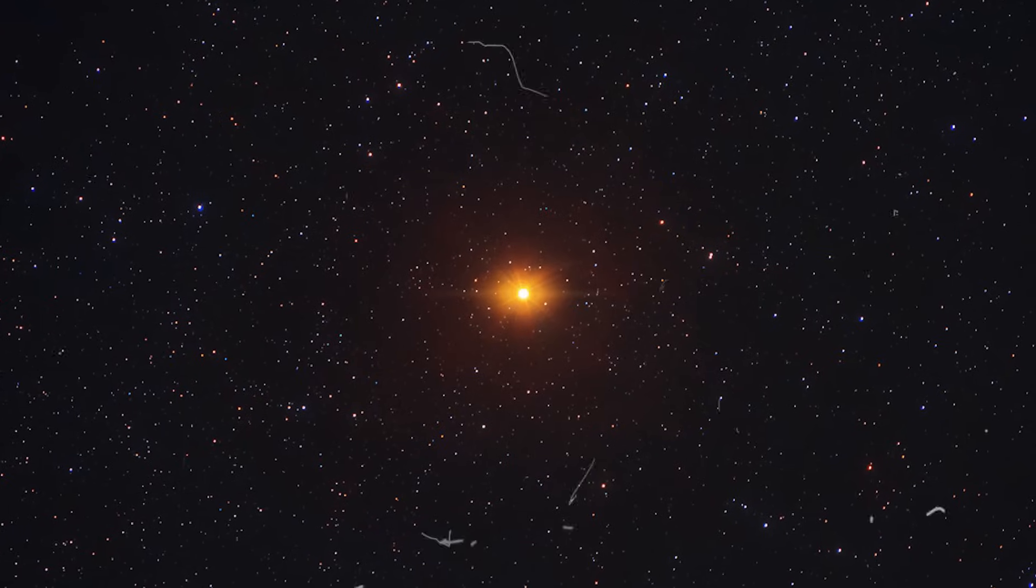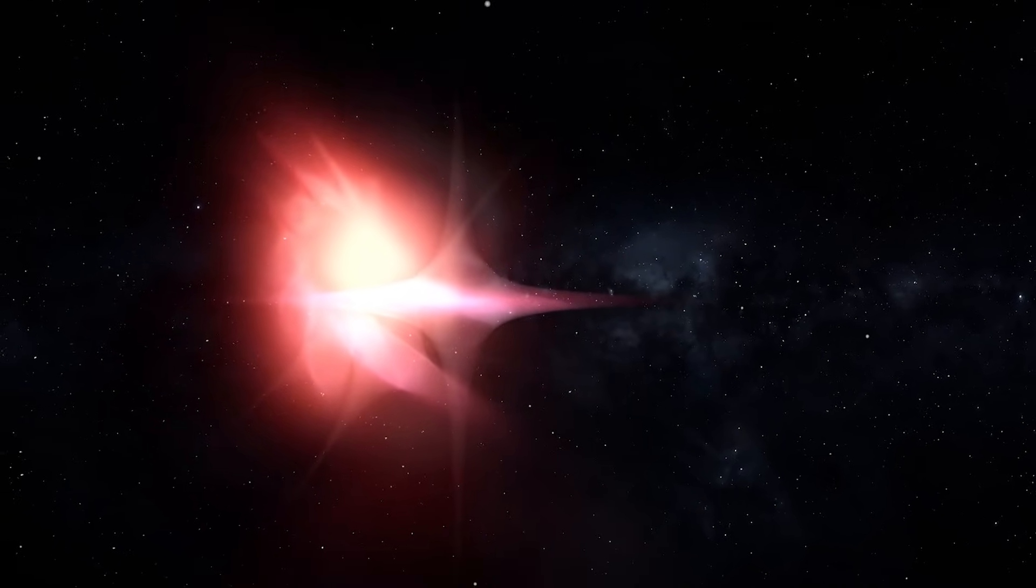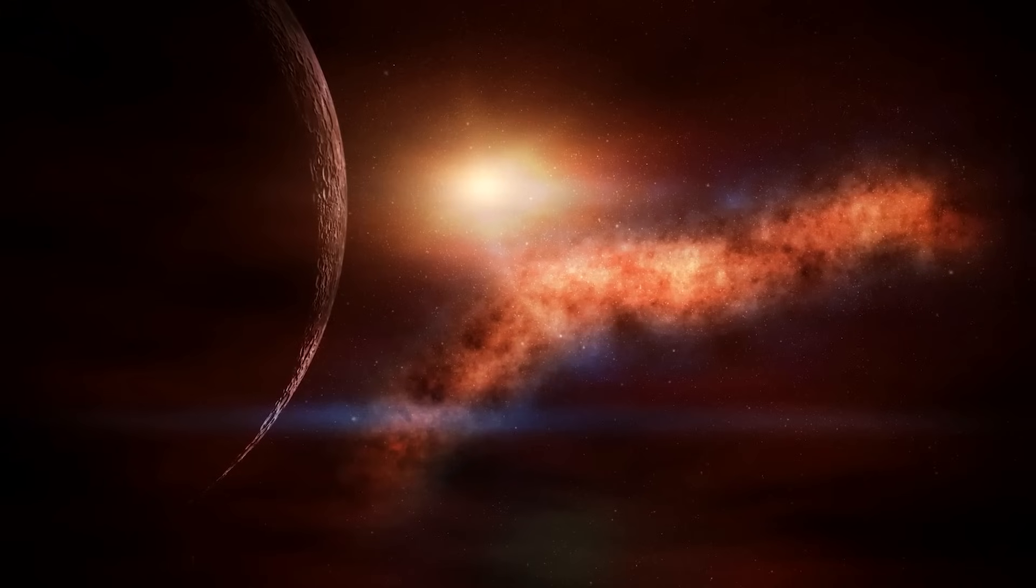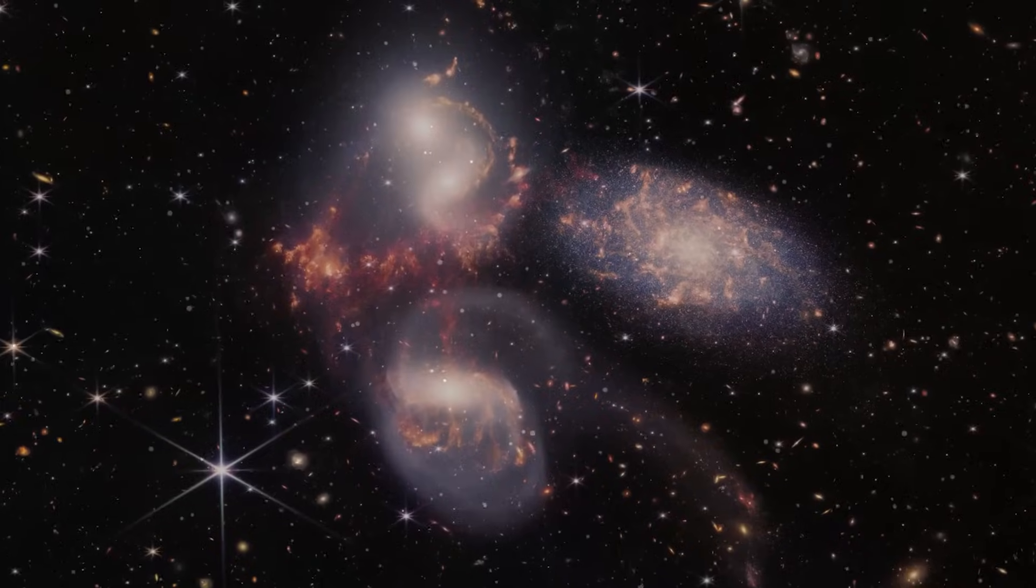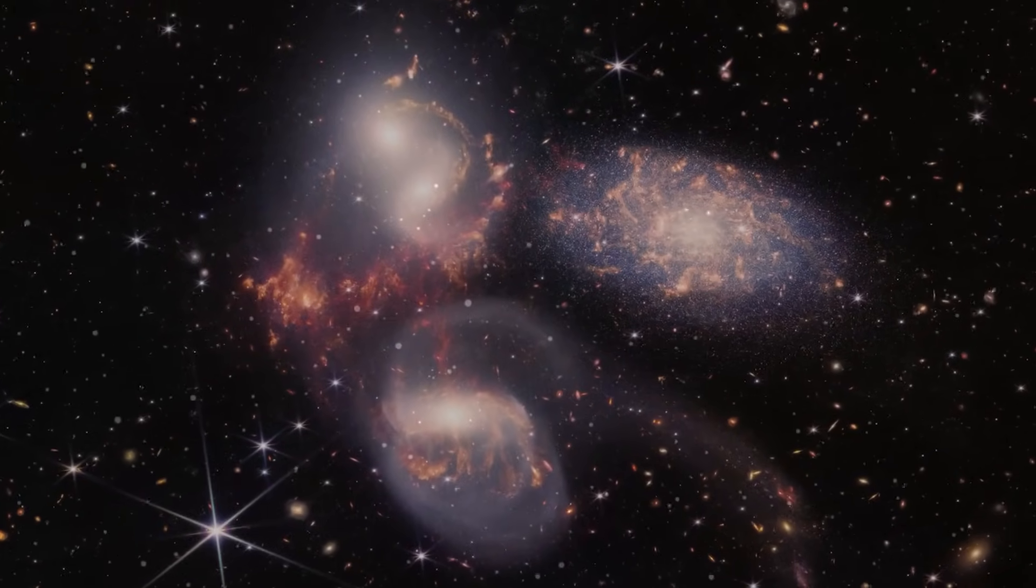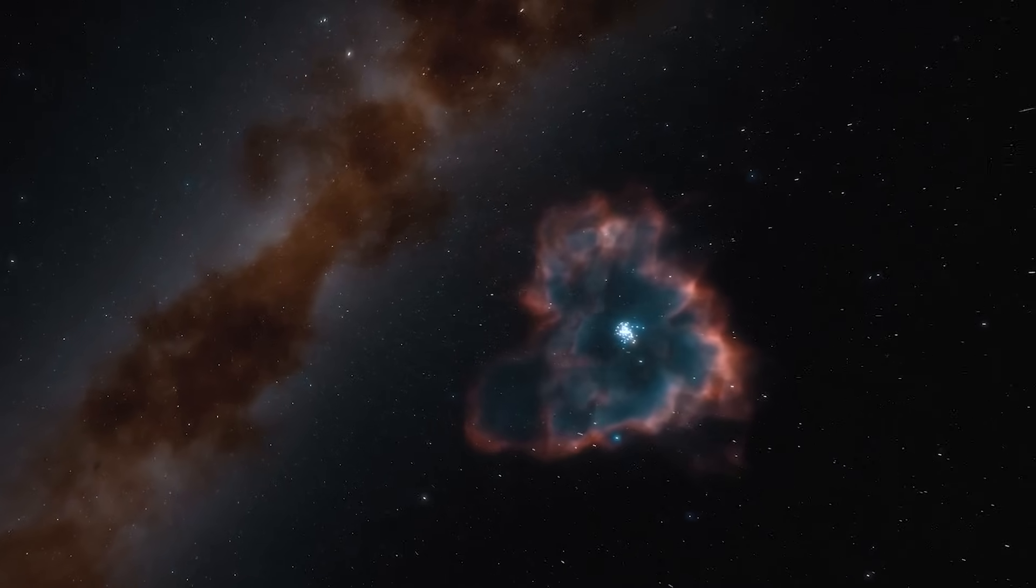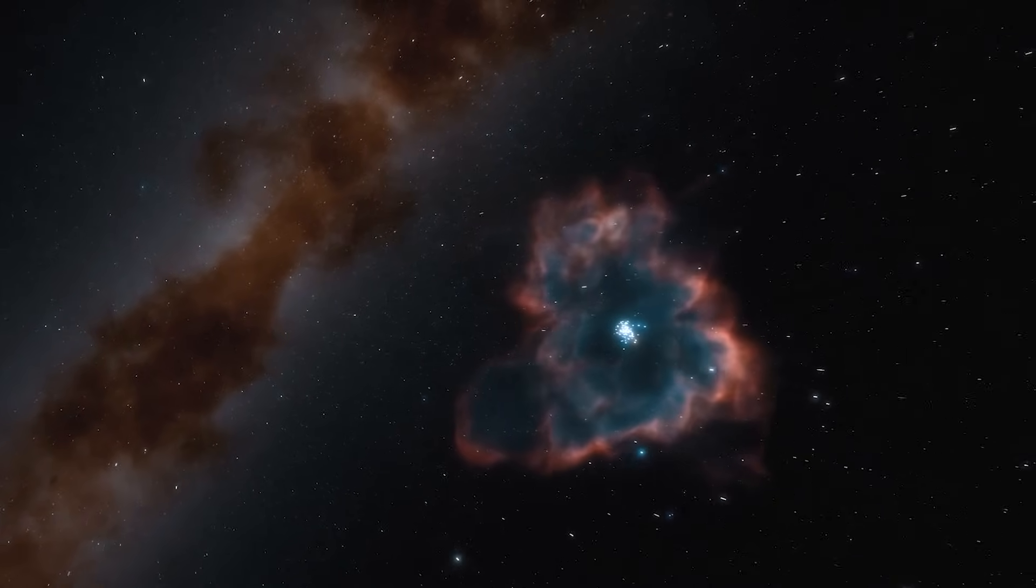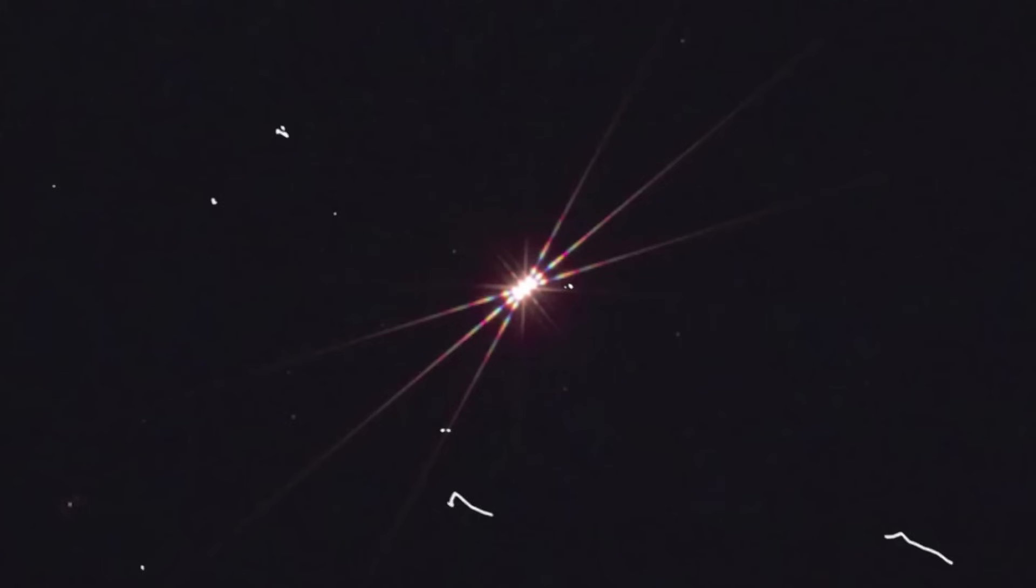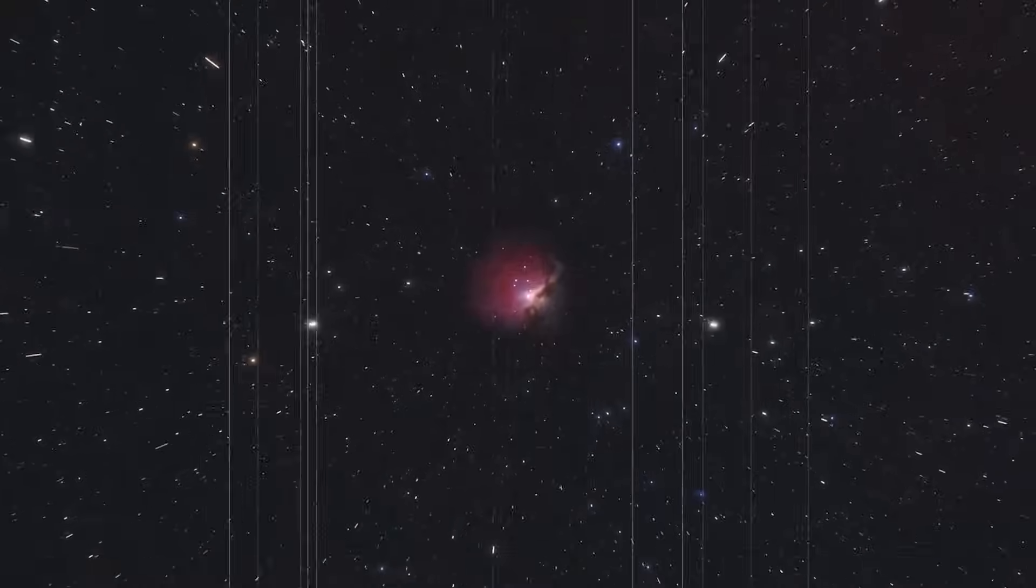For more context, let's take a minute to understand what Betelgeuse is. Betelgeuse is what we call a variable star. That means its brightness doesn't stay the same, but instead, it changes over time. While many stars show some fluctuations, Betelgeuse's variations are particularly noticeable and have been observed for over a hundred years. Initially, scientists thought these changes were regular, but recent observations have revealed unpredictable changes, adding another layer of intrigue to this already enigmatic star.